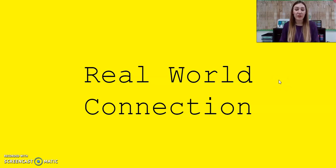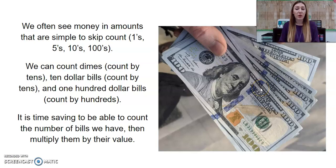Let's look at some real world connections and understand why you need to know how to multiply by 10 and 100. So we often see money in amounts that are simple to skip count, such as 1s, 5s, 10s, 100s. We can count dimes by counting by 10s, we can count $10 bills also by counting by 10s, and $100 bills counting by hundreds.